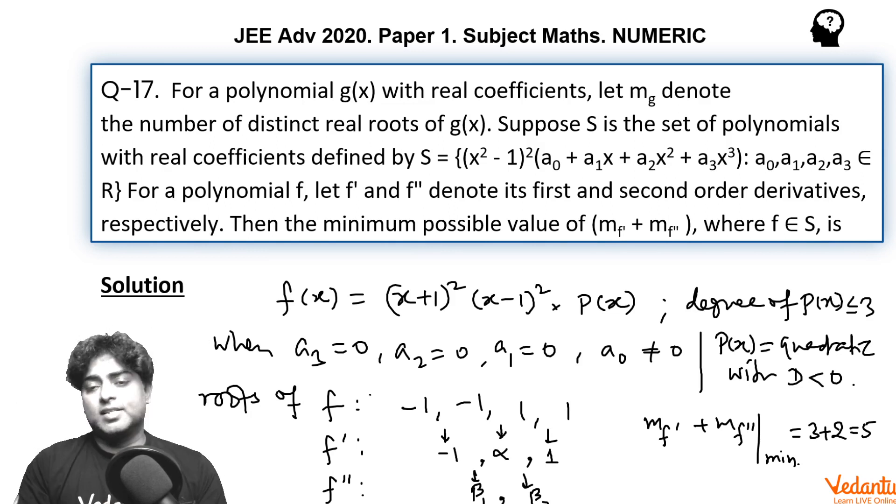In all other cases, like if P(x) is cubic or P(x) is a linear function or is a quadratic with real roots, the number of real roots of f will increase and it will definitely increase the minimum number of distinct real roots of f' and that of f''. Suppose I take P(x) as linear or cubic, at least one root will be there. And that root, suppose I take same as minus 1 or 1, in order to ensure the minimum possible value.